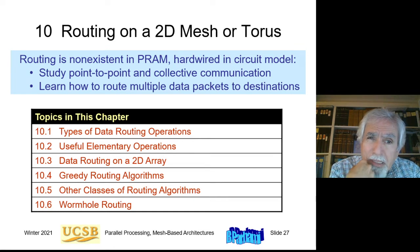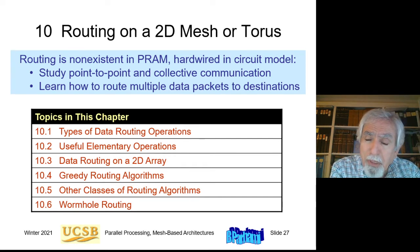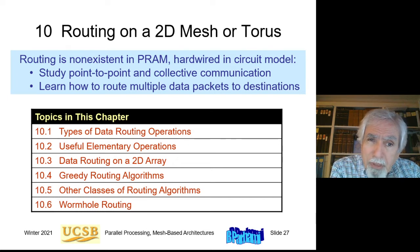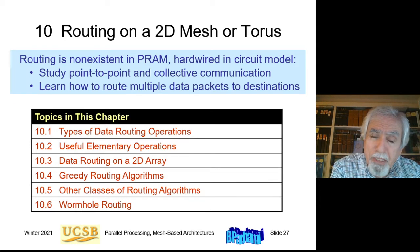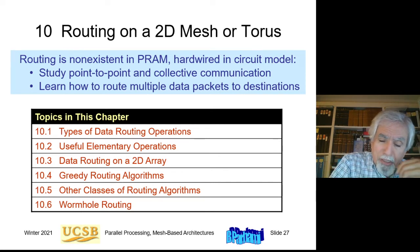Routing is non-existent in the shared memory PRAM model because we basically communicate between processors through the shared memory. It's also non-existent in the circuit model because all the connections are pre-established. So this is now the first time that we are faced explicitly with this problem of routing — sending messages from one processor to another processor, possibly using intermediate processors when the two processors are not directly connected in the architecture.